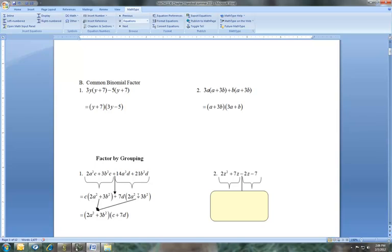Hopefully you'll see the 2a squared plus 3b squared. A lot of times when you factor by grouping, your parenthesis that contain the binomials are the same. So now I'm going to do a common binomial factor. I'm pulling out the 3a squared plus 3b squared. And in the second parenthesis, my leftovers, I have C plus 7d. Okay, so let's try this one.